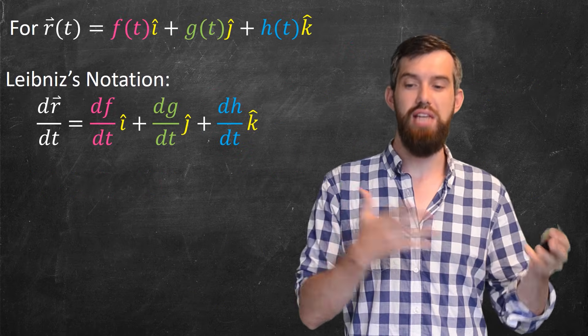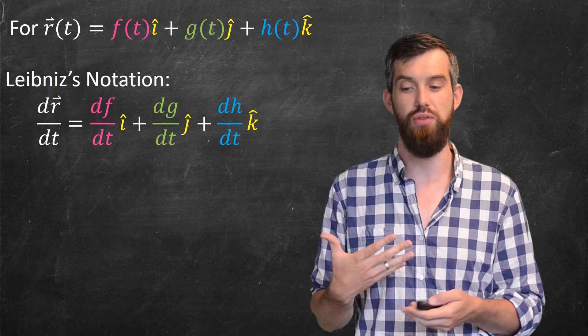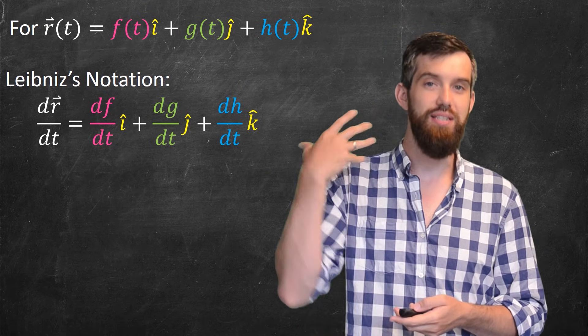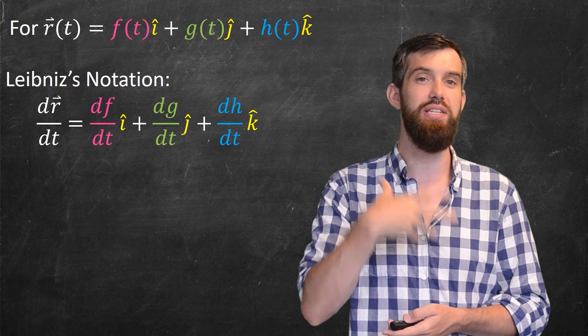By the way, there's two different types of notation. This notation I've just written is Leibniz's notation. So this is dr dt is equal to df dt in the i-hat, dg dt in the j-hat, and dh dt in the k-hat.